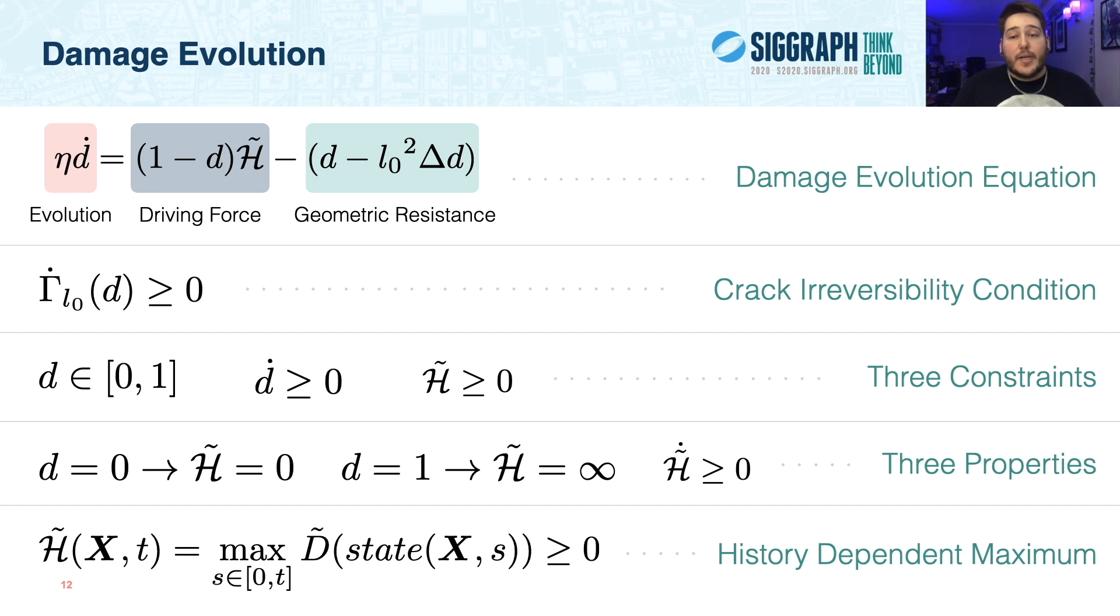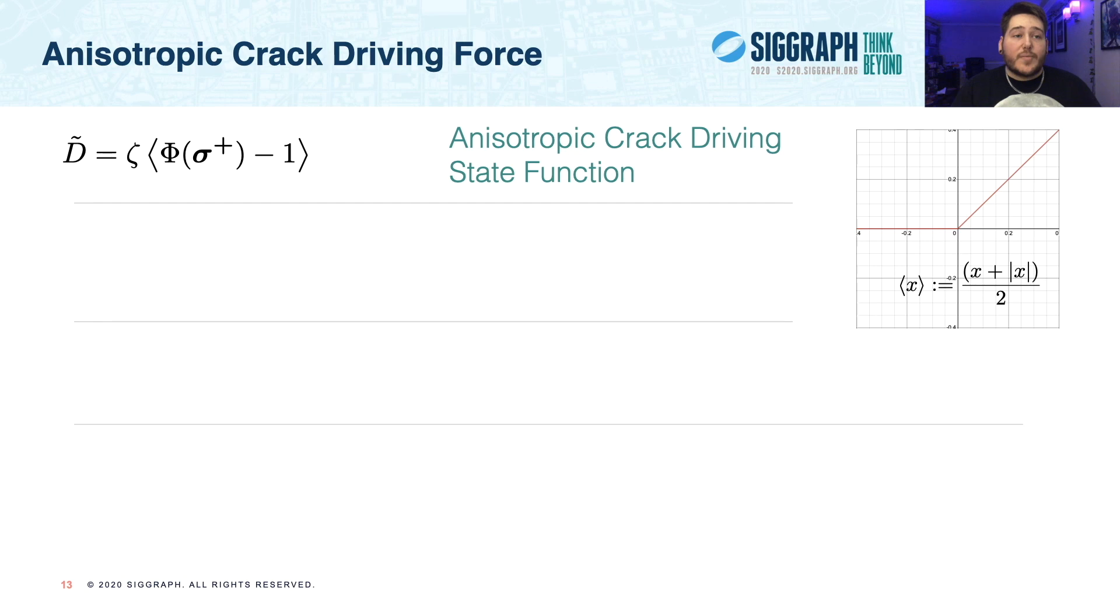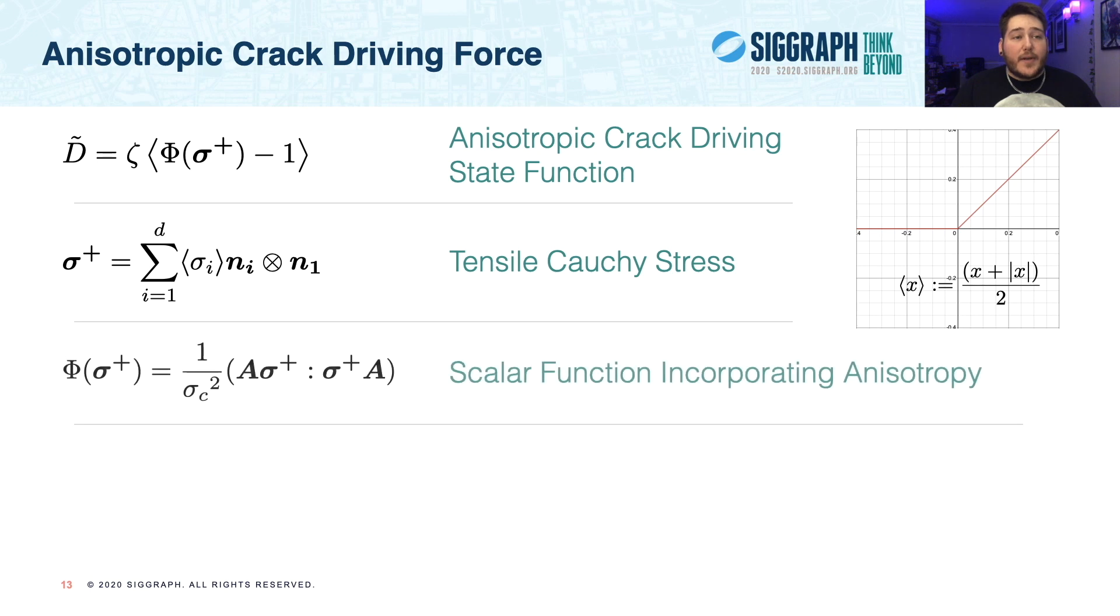And we satisfy this condition by defining H to be the history-dependent maximum of a generalized crack driving state function, D tilde, as seen at the bottom. And now we must design this function to satisfy the first two constraints, since we satisfy the third with this history-dependent maximum. In our formulation, we're inspired by an anisotropic crack driving state function that's shown success for biological tissues. The exact form of D tilde is shown at the top, where we introduce some new symbols. Zeta controls the slope of the driving force, but we kept this to be one to further reduce the parameter space. The brackets are called Macaulay brackets, and preserve positive values while flattening all negative values to 0, as you can see in the graph at right.